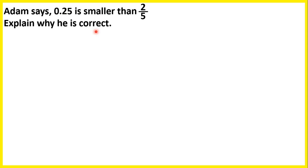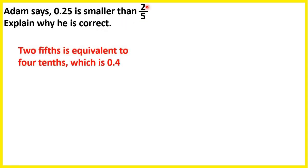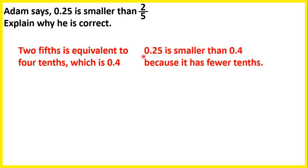The other way is to change the fraction to a decimal. 2-fifths is equivalent to 4 tenths, which is 0.4, because the first digit after the decimal point tells us how many tenths we have. And 0.25 is smaller than 0.4 because it has fewer tenths. Both numbers have 0 in the ones, but 0.25 only has 2 tenths while 0.4 has 4. So because 0.4 is larger than 0.25, 2-fifths is larger than 0.25, because 2-fifths is the same as 0.4.